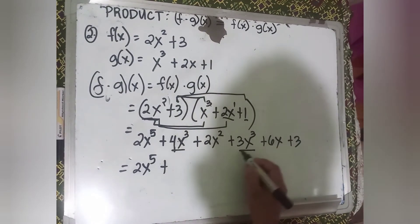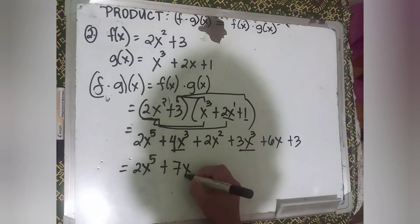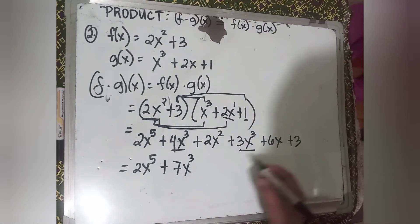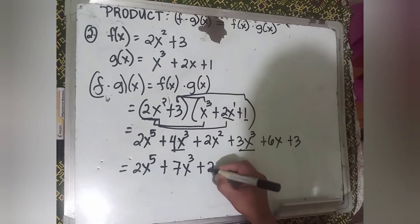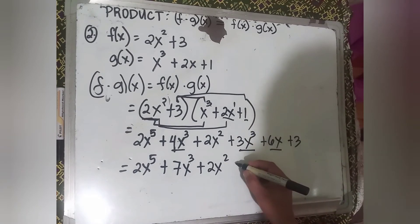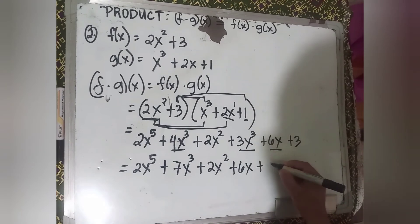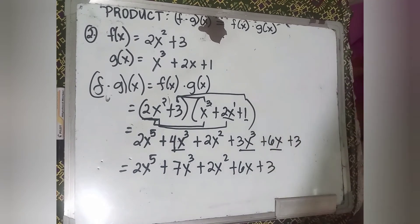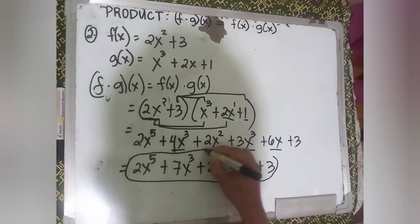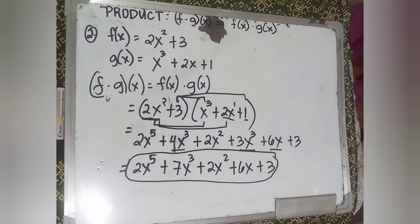Now combine like terms. 4x cubed plus 3x cubed is 7x cubed. There are no other like terms, so just copy the rest: 2x raised to the 5th plus 7x cubed plus 2x squared plus 6x plus 3. This is the final answer.